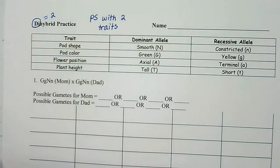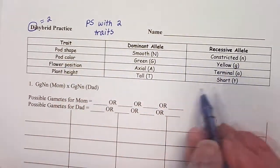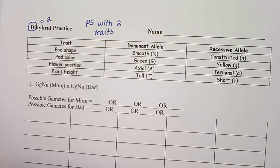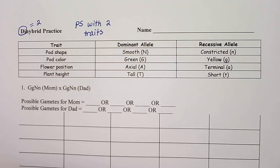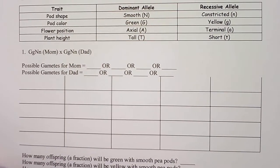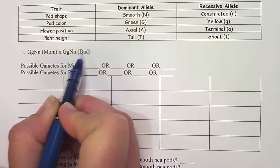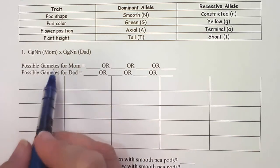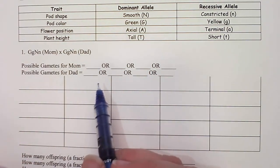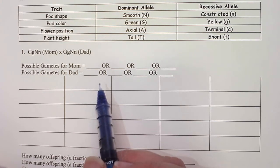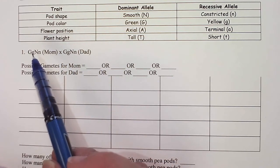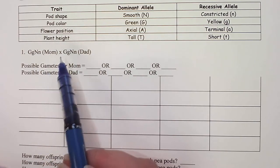We're going to increase the amount of letters we put in our Punnett square. This is the same pea plant example we used for the monohybrid practice — the plants Mendel used — and I'll let you know what the dominant and recessive allele varieties are. Question number one gives us the genotype for mom and dad. Before we can set up the Punnett square, we have to use the law of independent assortment to figure out the possible combinations of G and N that mom can offer in her gametes.